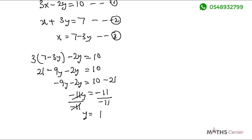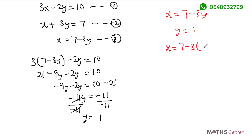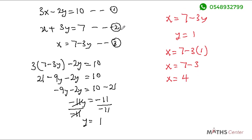Remember we have already made x the subject in equation 3 and we have the value of y. From equation 3 we know that x is equal to 7 minus 3y. But we have just found out that y is equal to 1, so we will substitute the value of y which is 1 into this equation. We get x is equal to 7 minus 3 times 1, which is 3. 7 minus 3 will give us 4, so x is equal to 4. For the pair of equations given to us, the value of x is 4 and the value of y is 1.